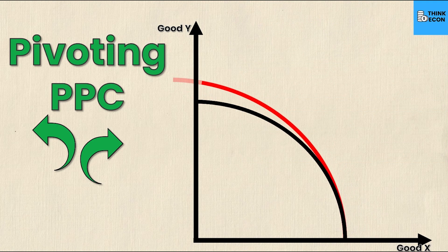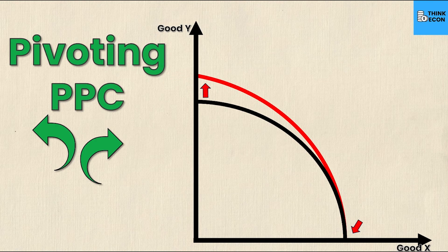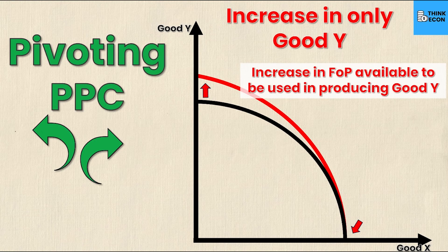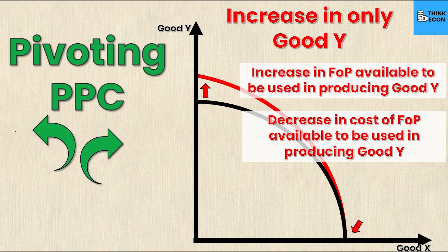We could also have an increase in the y-intercept with no change in the x-intercept — almost the opposite of before. I can now produce more of good Y but the same amount of good X, so we call this an increase in only good Y. This would be caused by an increase in the factors of production available for producing good Y, or a decrease in the cost of those factors for good Y only.